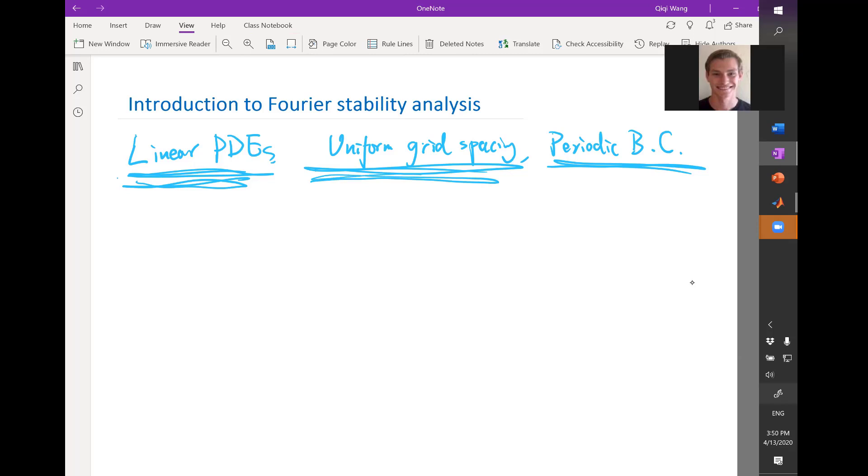Uniform grid spacing is another constraint, and there is not really much to do there except for if you have a non-uniform grid, maybe make the grid a little bit better so that to really stabilize it. And the periodic boundary condition is another constraint.